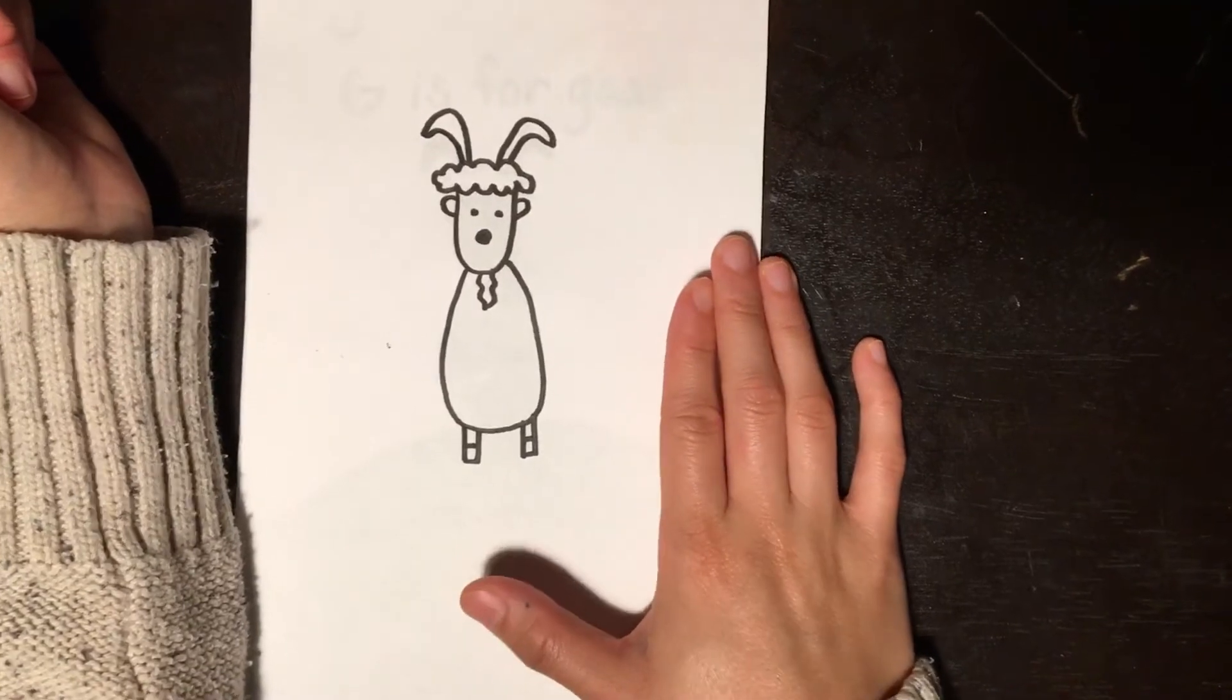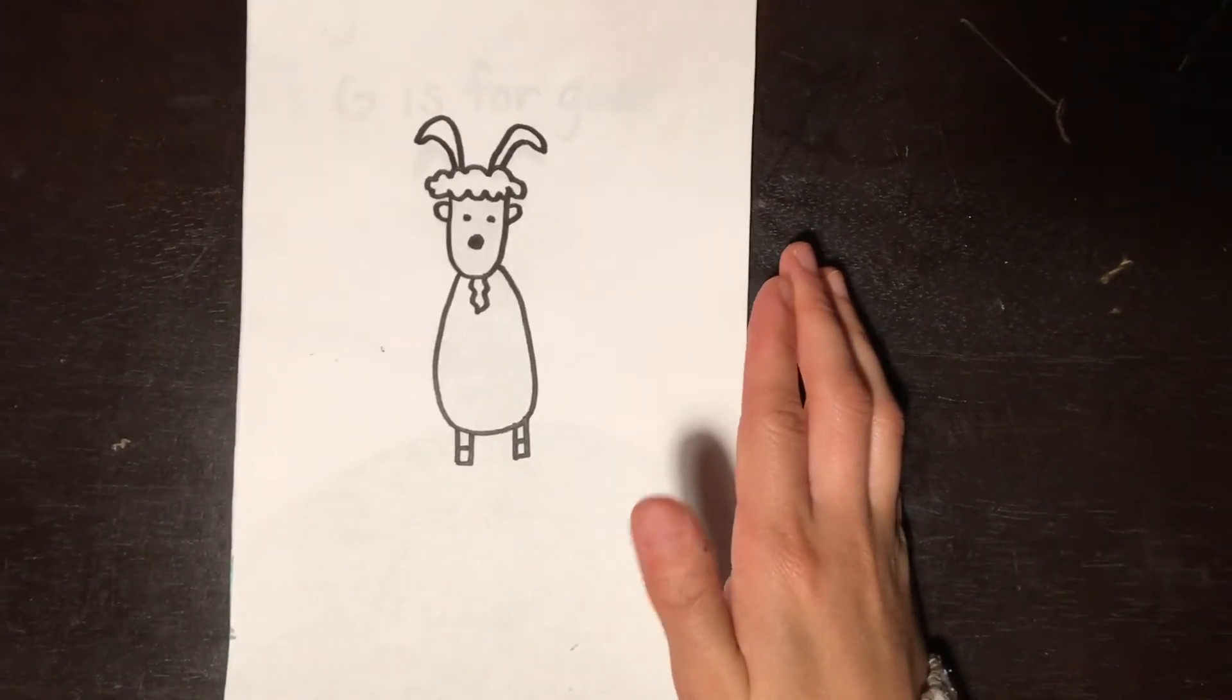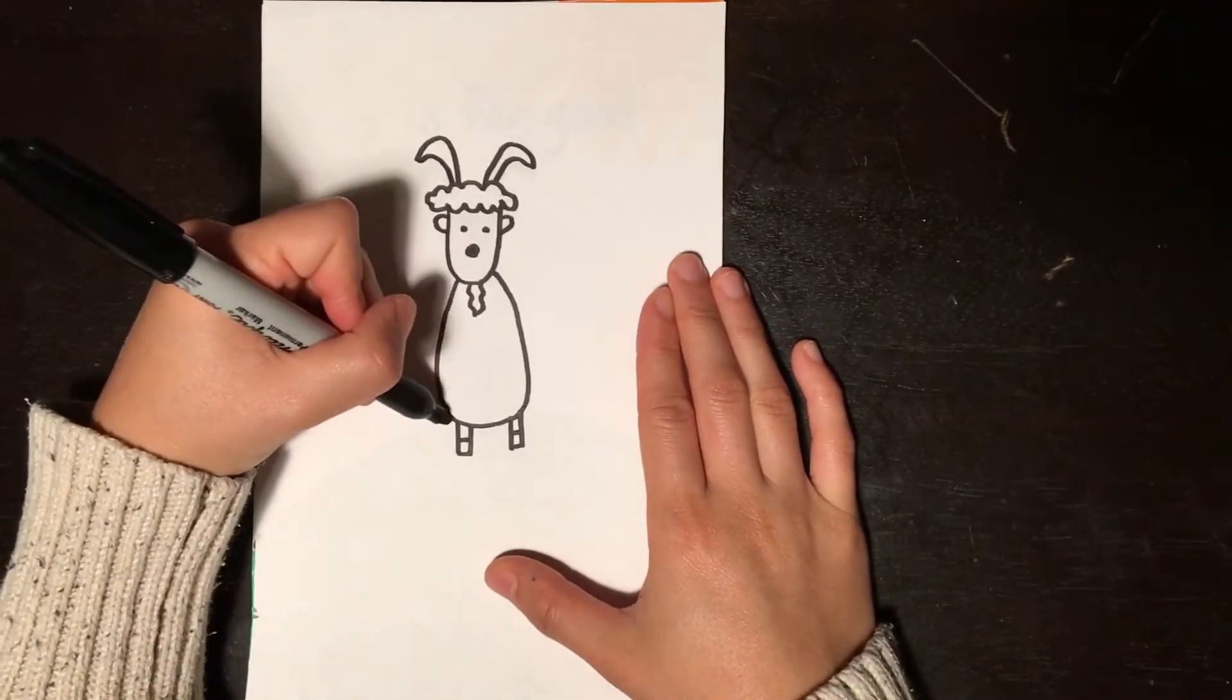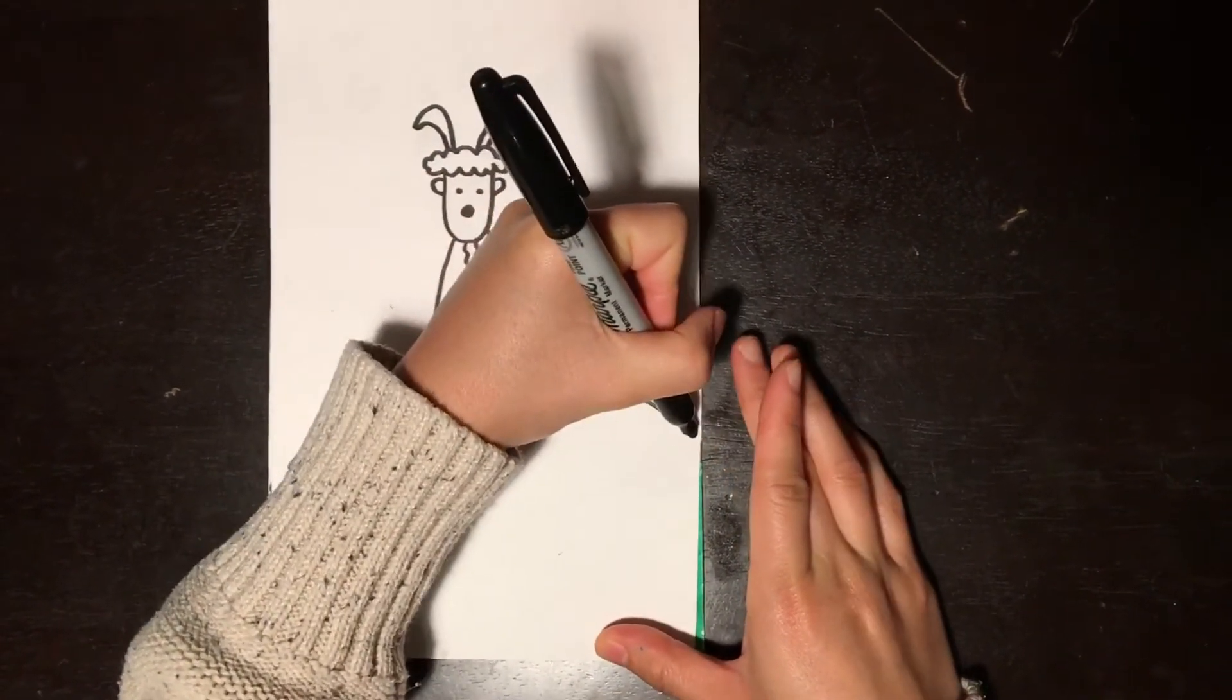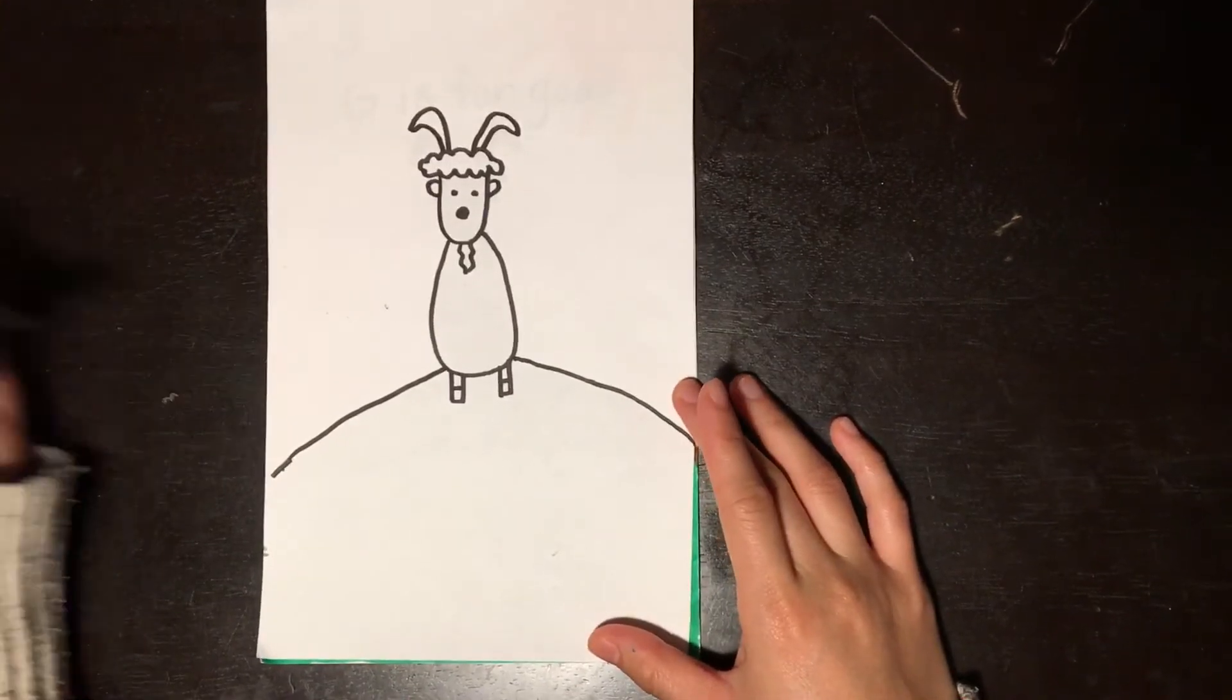Okay. So there we go. And then you can add some detail. So mine's gonna be sitting on like a hill. Because goats sit on hills.